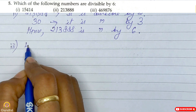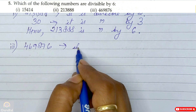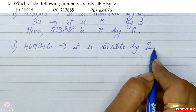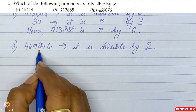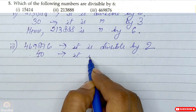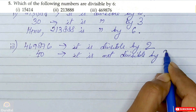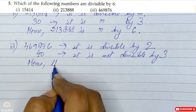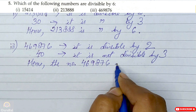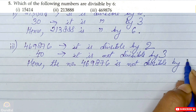Third one: the number is 4, 6, 9, 8, 7, 6 — that is 469876. The last digit 6 is even, so it is divisible by 2. However, when we add all the digits, the sum is not divisible by 3. Hence, the number 469876 is not divisible by 6.